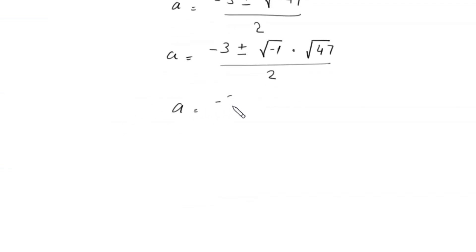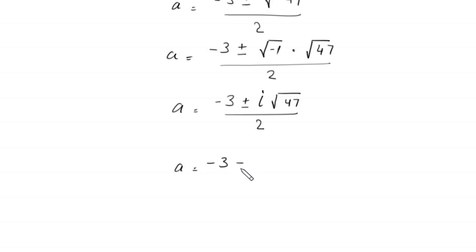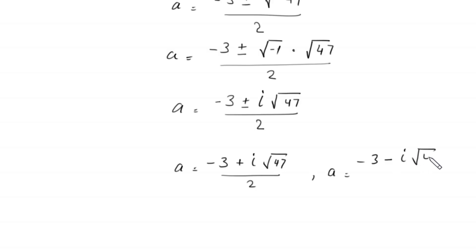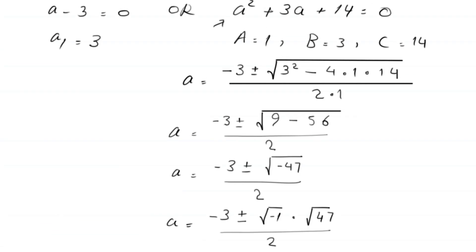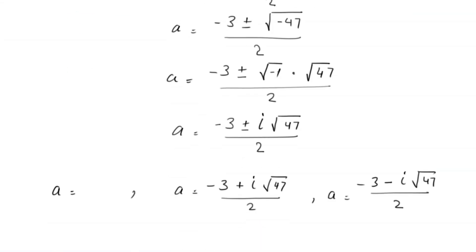Next, a equals negative 3 plus or minus i times root 47, divided by 2, since square root of negative 1 equals i. This means we get two complex values: a equals negative 3 plus i times root 47, divided by 2, and a equals negative 3 minus i times root 47, divided by 2. Together with the first value a equals 3, we have three solutions to this equation.